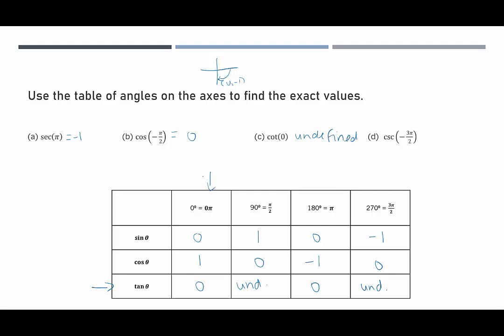And last but not least, cosecant of negative 3 pi over 2. Negative 3 pi over 2, that would be going counterclockwise to 3 pi over 2, which actually puts us up here. This would be corresponding to 0, 1.